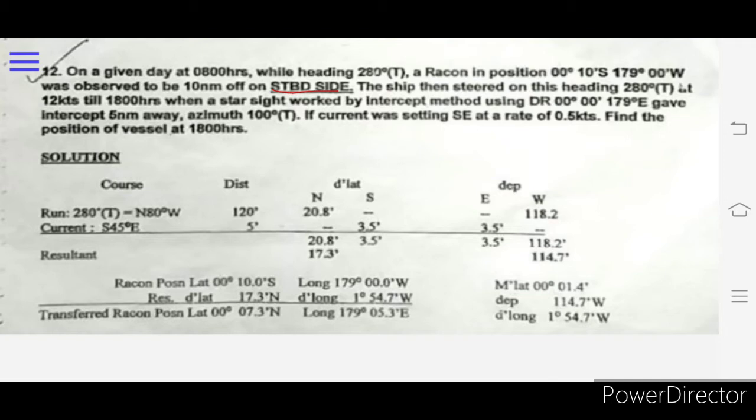If current was setting southeast at a rate of 0.5 knots, find the position of vessel at 1800. Just consider a little bit of days work concept. The vessel was doing a course of 080, which in quadrant form will be North 80 degrees East.